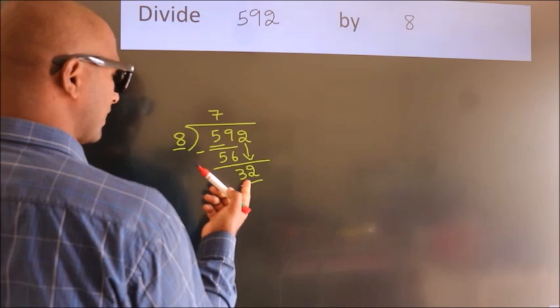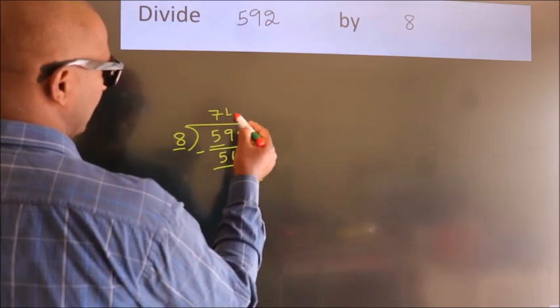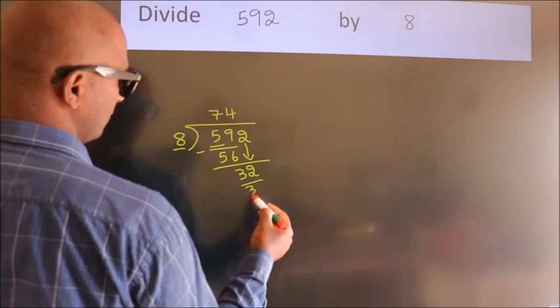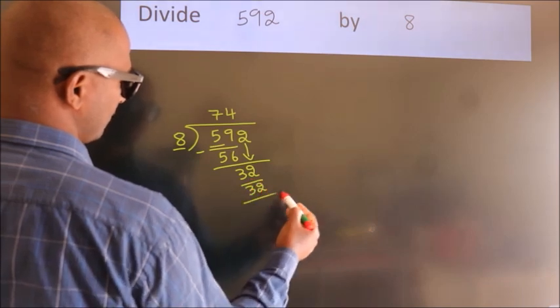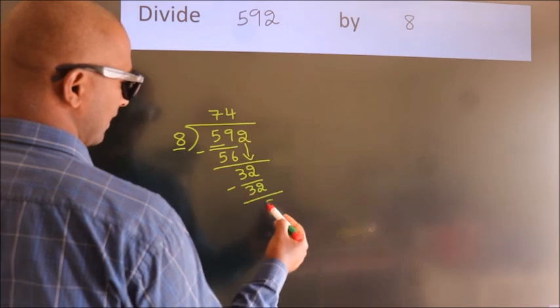When do we get 32 in the 8 table? 8 times 4 is 32. Now we subtract and get 0.